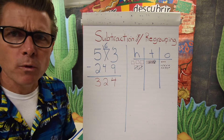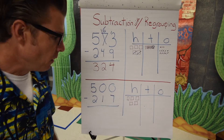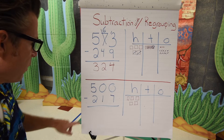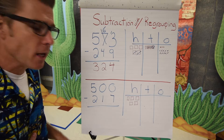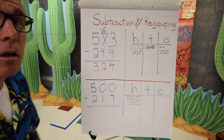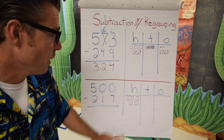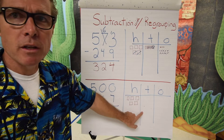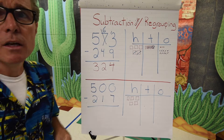That's really what's going on with regrouping. Let's take a look at one more before we go. This time we're going to take five hundred and subtract two hundred and seventeen. Just like in the top problem, I've broken this out: five hundred in the hundreds place, zero in the tens place, and zero in the ones place.